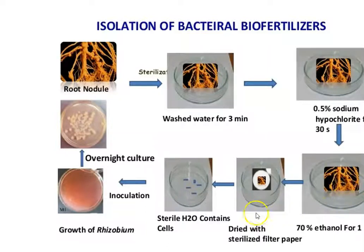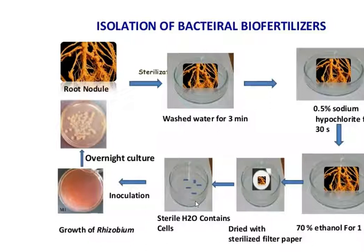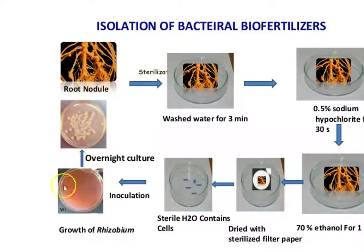After sterilizing, take the nodule contents in a petri dish or test tube. Add 5 ml of sterile water, wash 2 to 3 times with sterile water to clean thoroughly, then crush the nodules using a glass rod. From the crushed solution, directly streak onto the Yeast Extract Mannitol Agar plates.